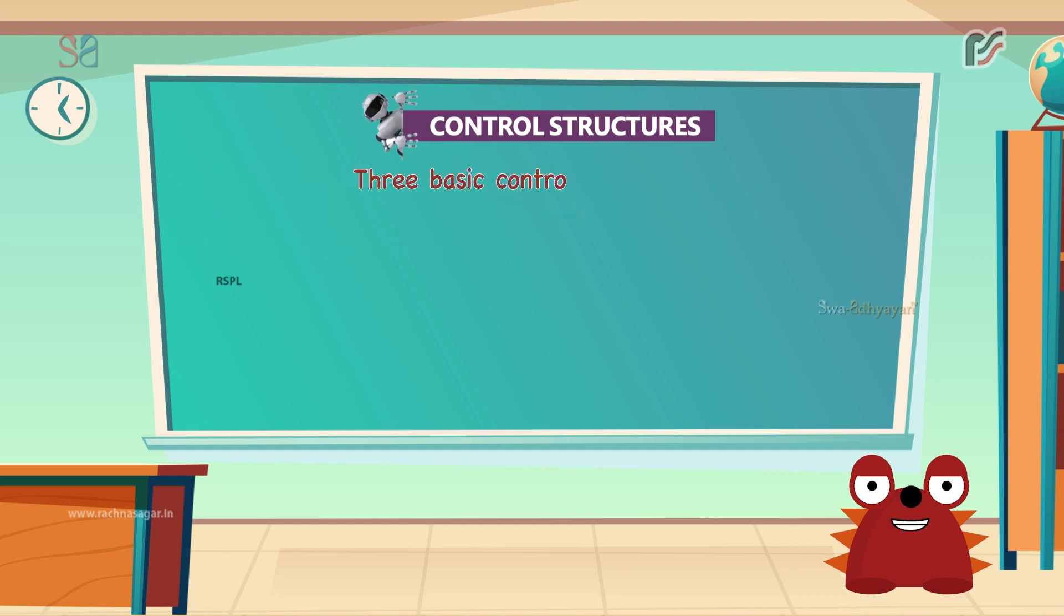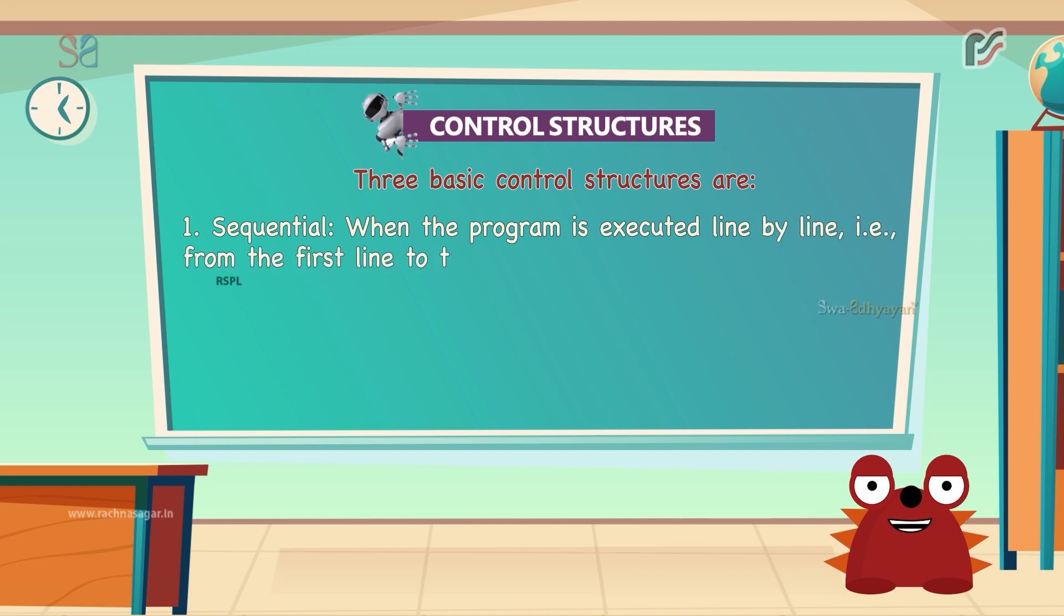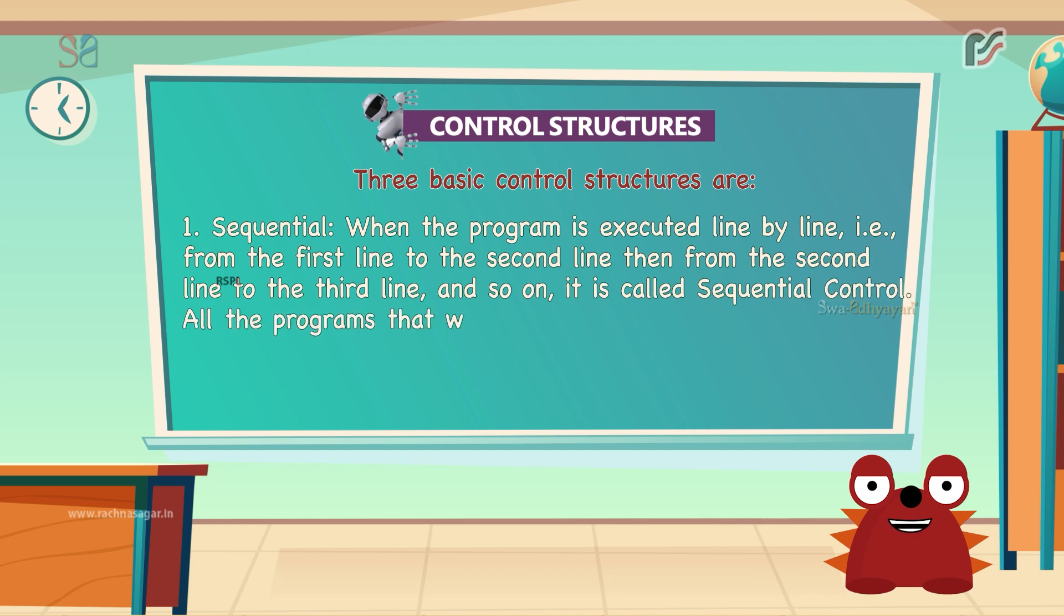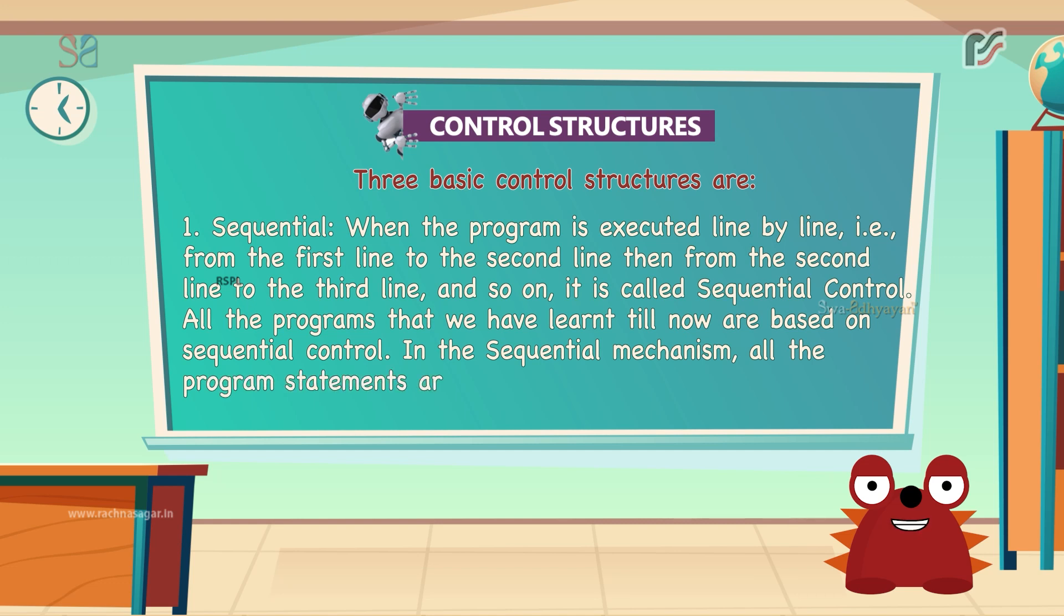There are three basic control structures. The first is sequential. When the program is executed line by line, that is from the first line to the second line, then from the second line to the third line and so on, it is called sequential control. All the programs that we have learned till now are based on sequential control. In the sequential control or mechanism, all the program statements are executed one after another.